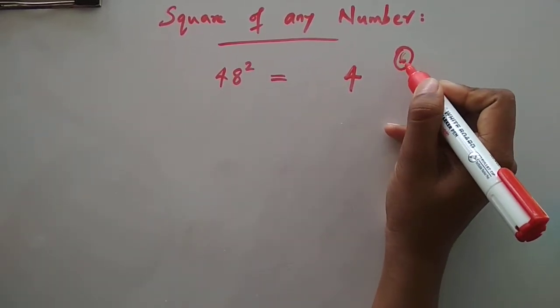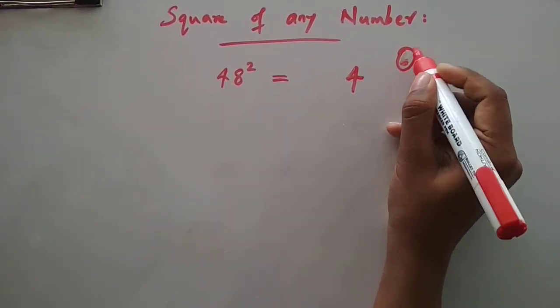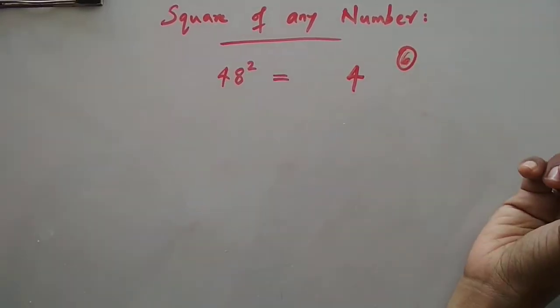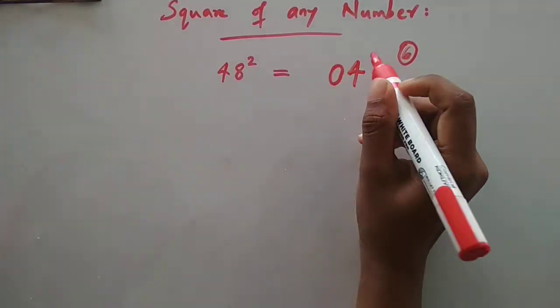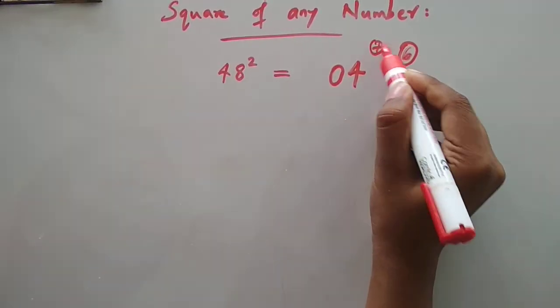64. We have kept some 6 aside, so we should add that 6 to 64. It will be 70. 64 plus 6 is 70. So we will write 0 here, then we will keep 7 aside.